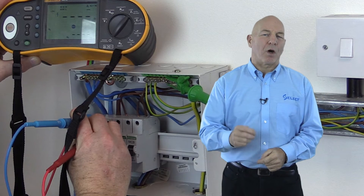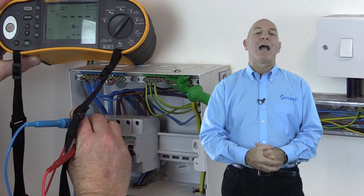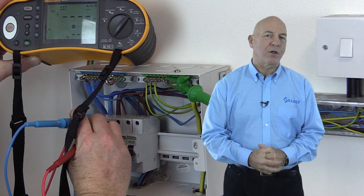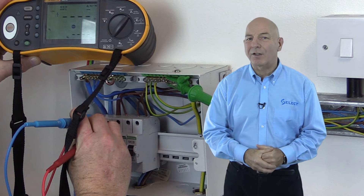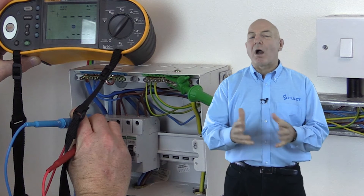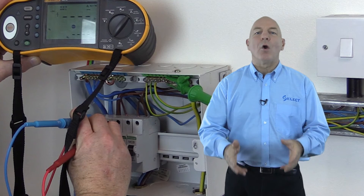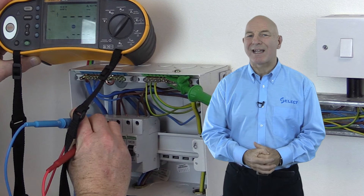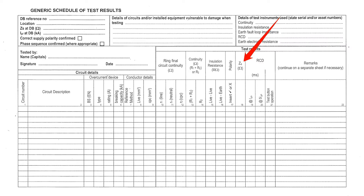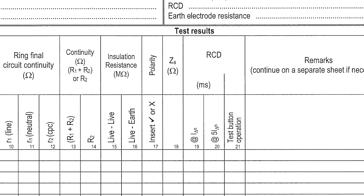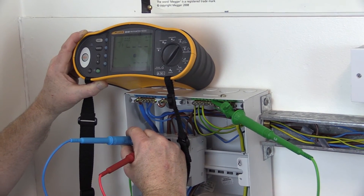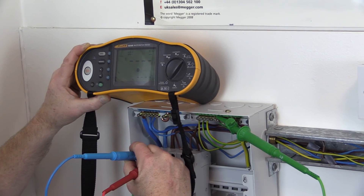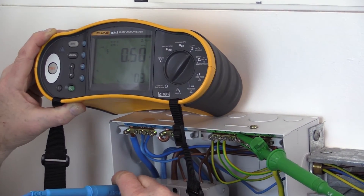The second part of the earth fault loop impedance test is to determine the earth fault loop impedance at the furthest part of each circuit. As noted during the demonstration of testing the continuity of protective conductors test method one, which measures R1 plus R2 of the final circuit, we can simply add this value to the measured ZE value and record it as the earth fault loop impedance ZS of the circuit in the appropriate column of the schedule of test results. Alternatively, we can measure this using the earth fault loop impedance tester at the furthest part of the circuit, and we'll demonstrate this difference on the distribution circuit supplying the single-phase distribution board.